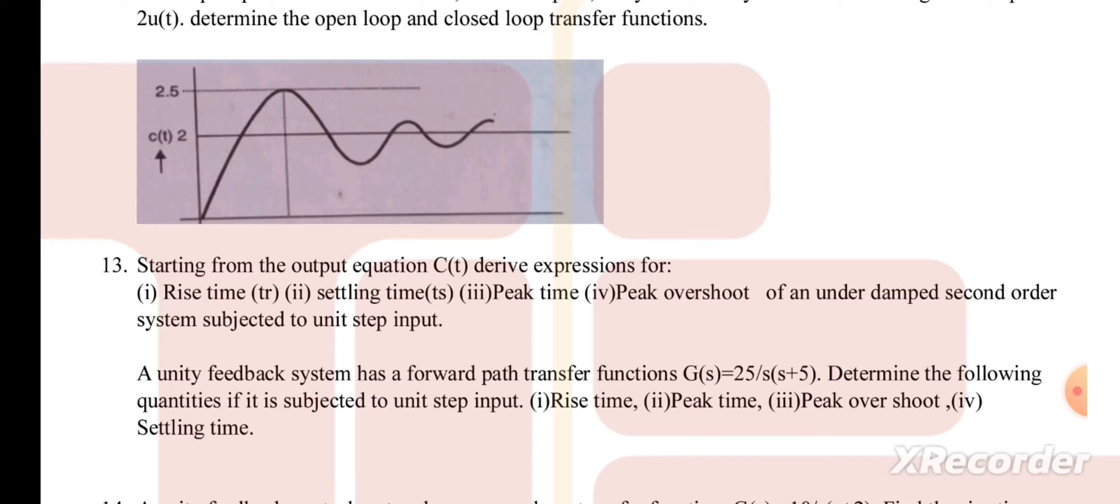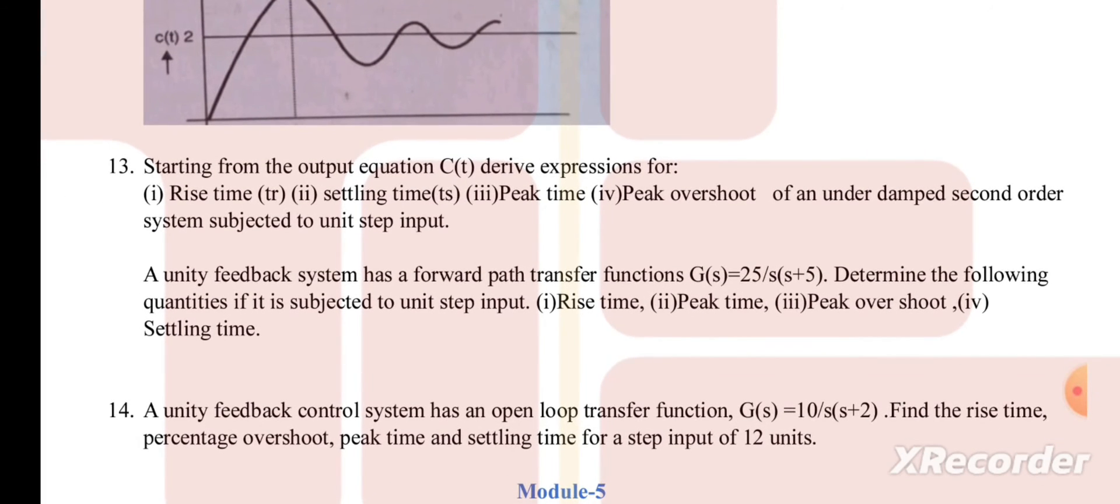And also you can see question 13, starting from the output expressions you have to derive the expressions for rise time, settling time, peak time, peak overshoot of an under-damped second order system subjected to unit step input. And unity feedback system forward path transfer function is given, determine the following quantities if it is subjected to unit step input: rise time, peak time. So you may get questions on finding the rise time and deriving the expression for rise time, settling time.